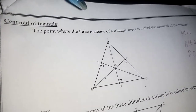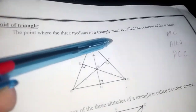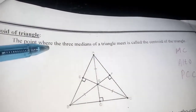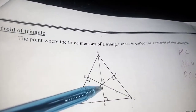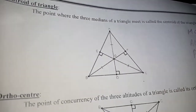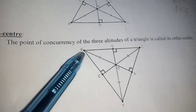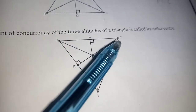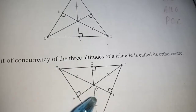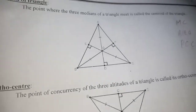Now, what is the centroid of a triangle? The point where the three medians of a triangle meet is called the centroid of that triangle. Also, the point of concurrency of the three altitudes of a triangle is called the ortho center of the triangle.